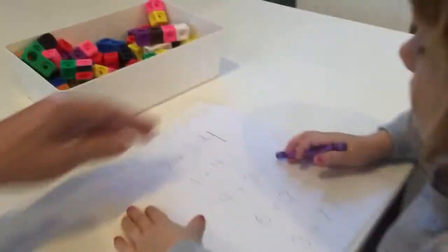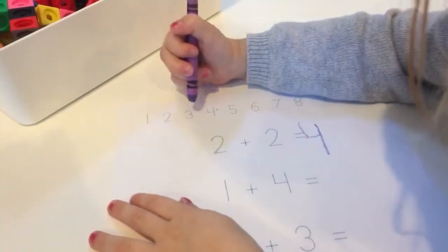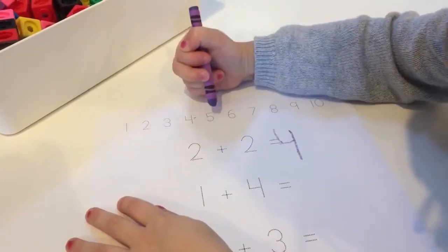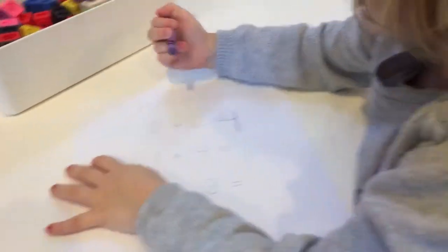Here, let's turn this around so we can see. Let's do it like the number line. Yeah, let's use the number line. Let's find out. One, two, three, four, five. So a five looks like that.